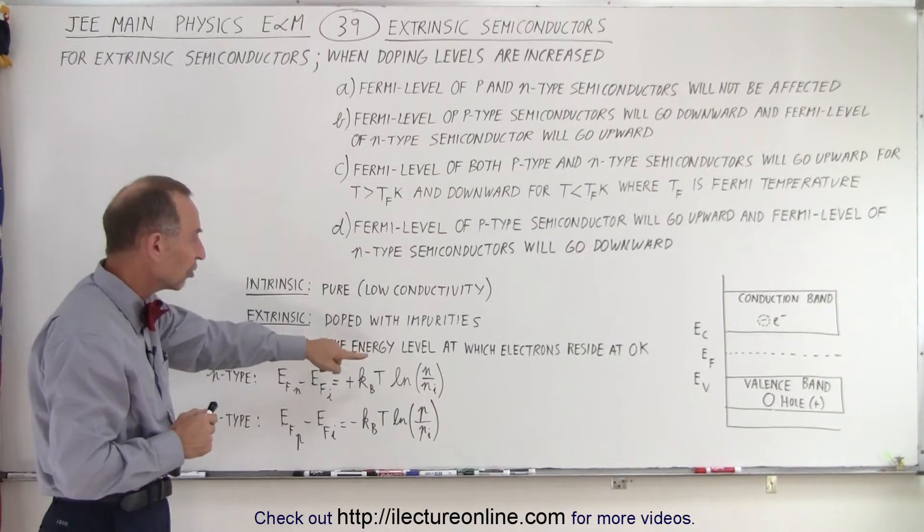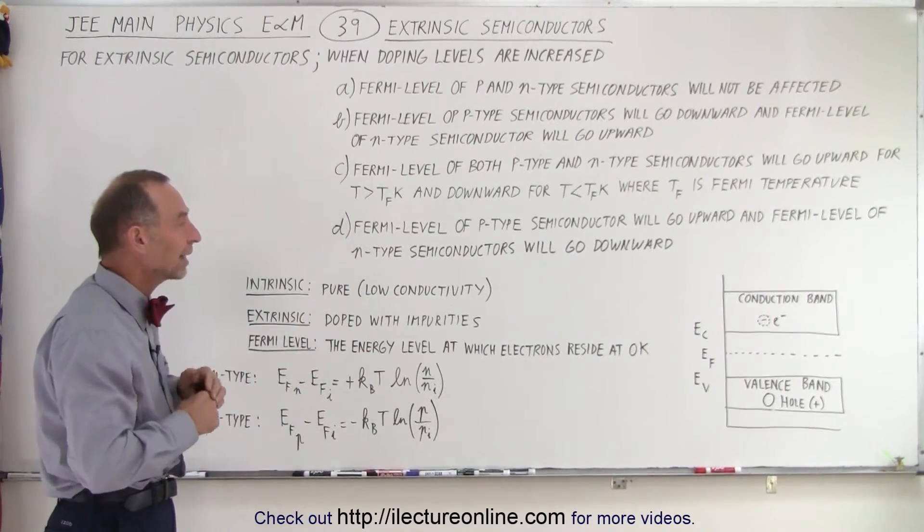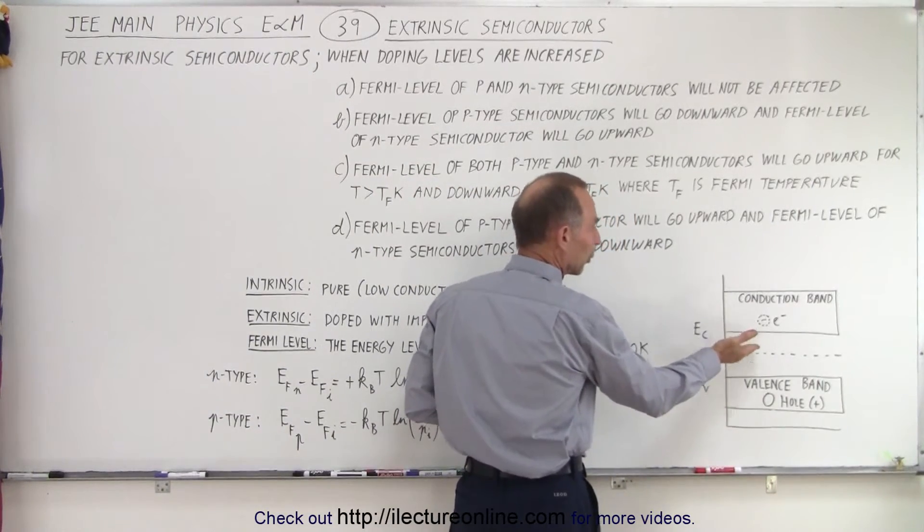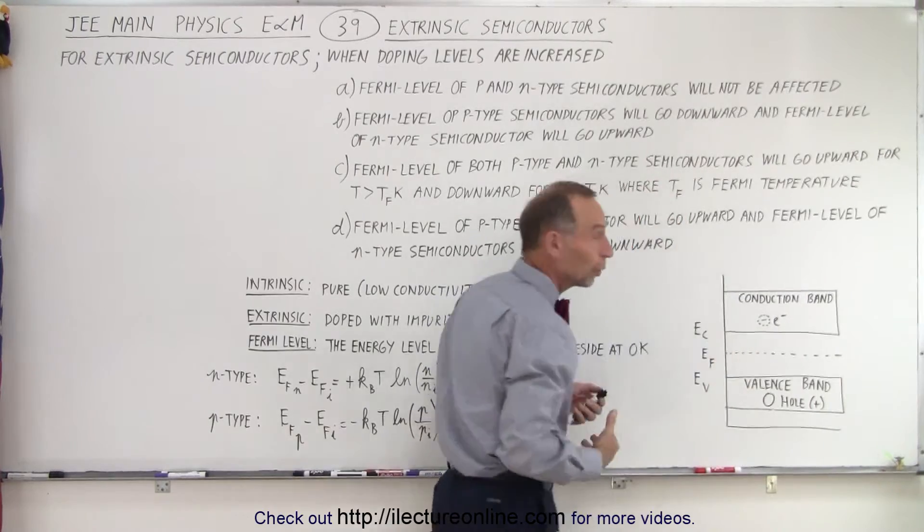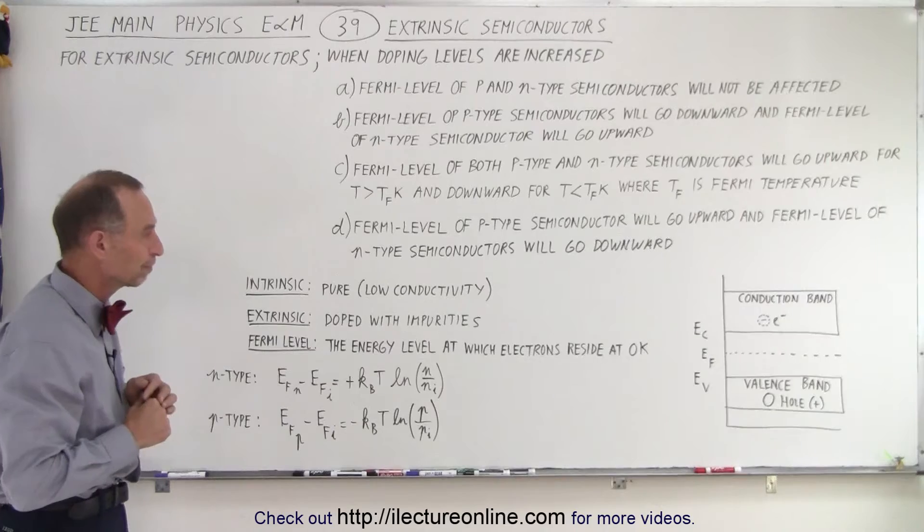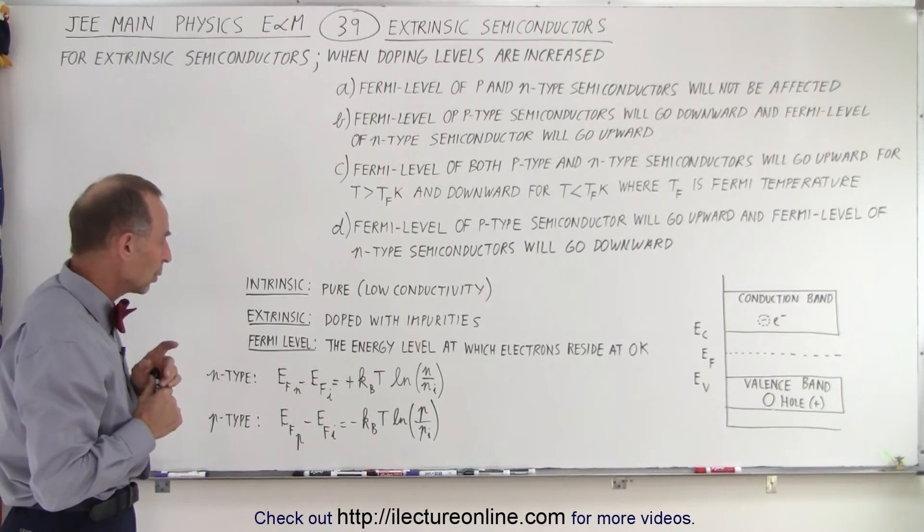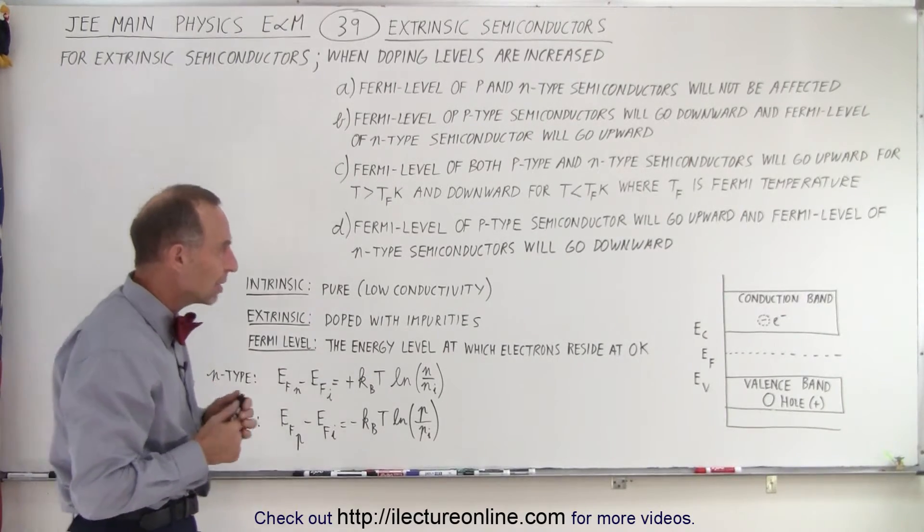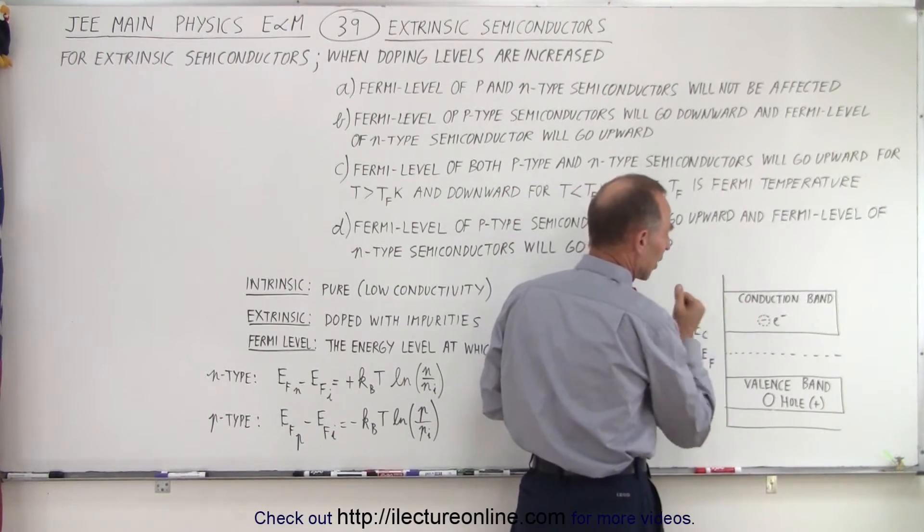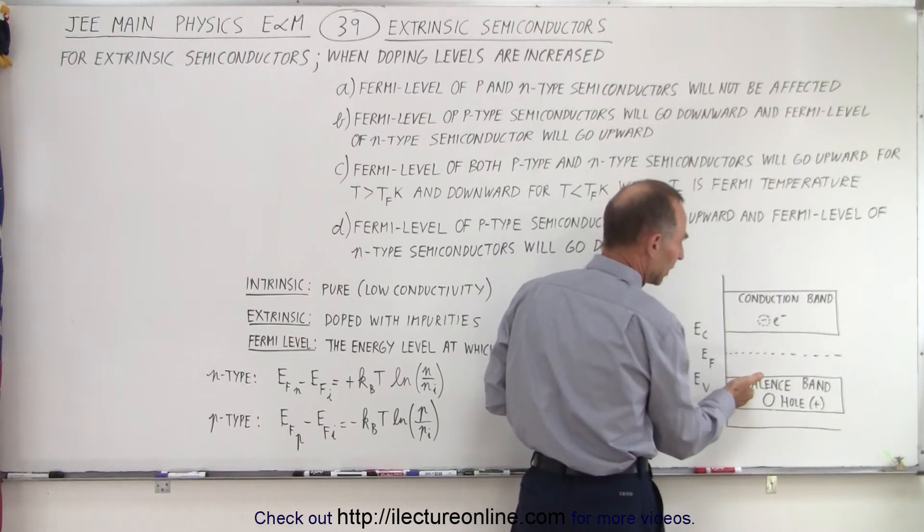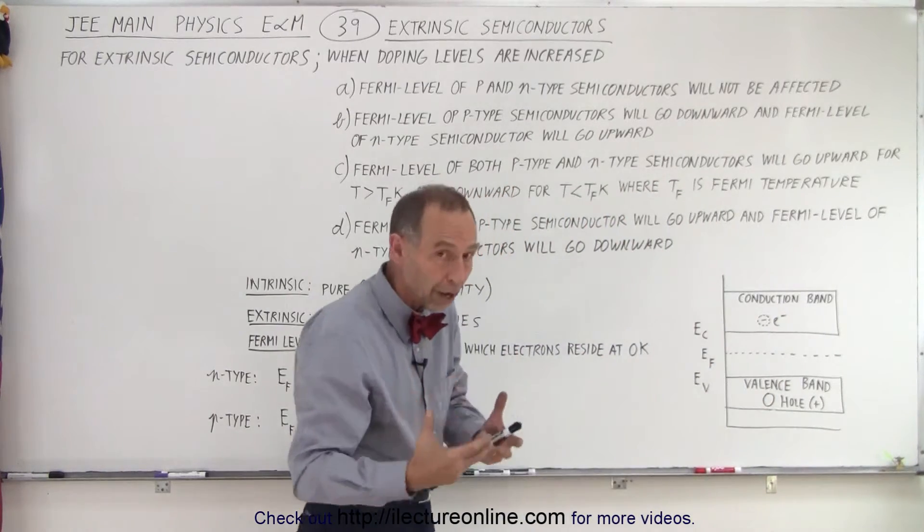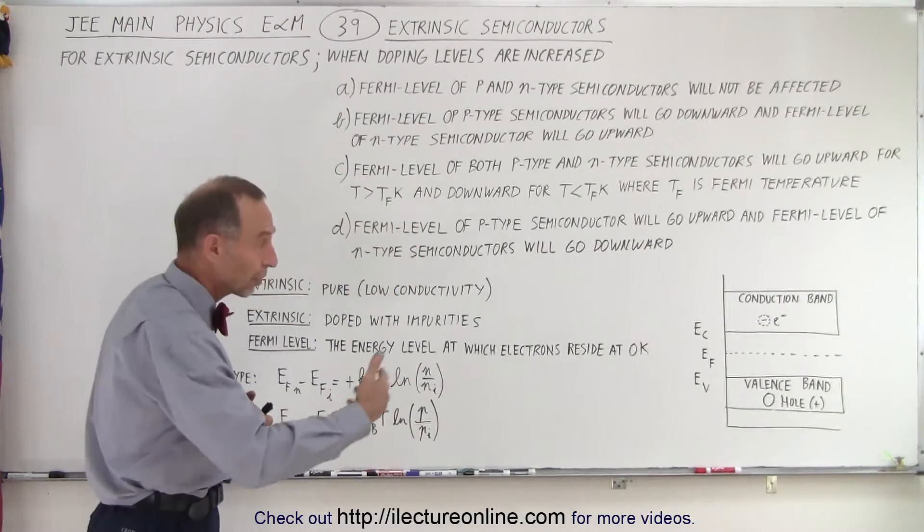The Fermi level is the energy level at which electrons reside at zero K, at zero degrees Kelvin. And so that Fermi level can either go up or go down. And the question is, will it go up and down or go down with the increase in doping levels? Now it turns out if we increase the doping levels in the conduction band, we essentially add free electrons. If we increase the doping level in the valence band, we essentially create more holes which are positive for electrons to jump into.